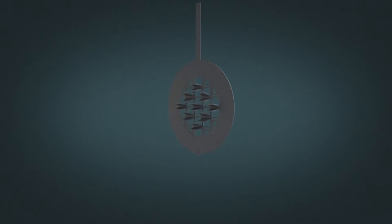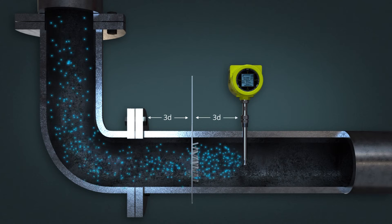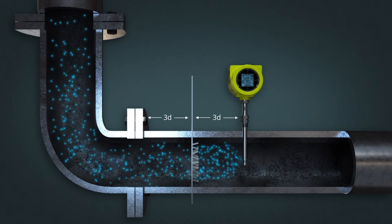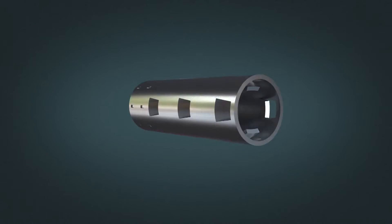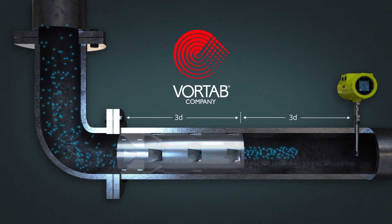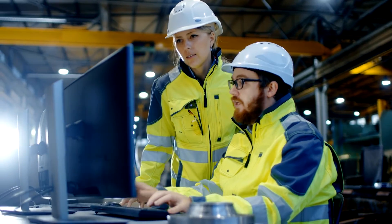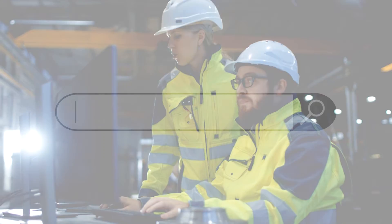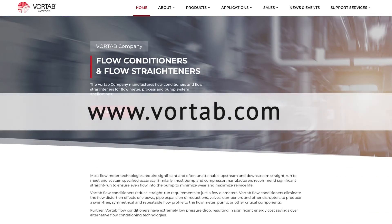There are multiple Vortab flow conditioner models to accommodate a variety of process requirements, including flange or weld-in-place panels, insertion sleeve, spool piece sections, and even elbow sections. For flow meters, pumps, and other flow profile critical equipment, Vortab flow conditioners are your proven application and lowest installed cost solution.